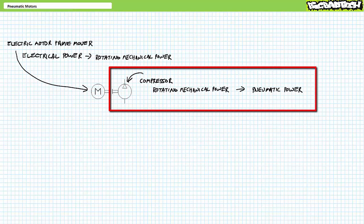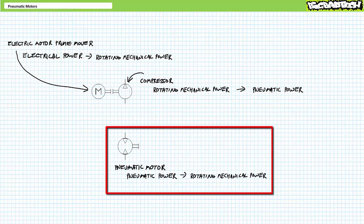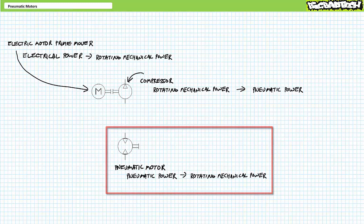Viewers will recall pneumatic compressors, analogous to pumps in a hydraulic system, are devices that convert the rotational mechanical power output of a prime mover to fluid power output. Pneumatic motors, or air motors in contrast, are actuators that convert pneumatic power input to rotational mechanical power output. Air motors are compressors in reverse.